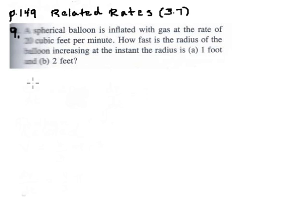So let's look at what we're being told in the problem. The first phrase says that the spherical balloon is inflated with gas at the rate of 20 cubic feet per minute. So the volume is increasing at the rate of 20 cubic feet per minute. That tells us that dV/dt is equal to 20.